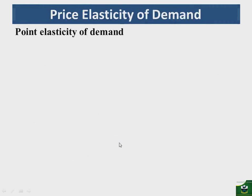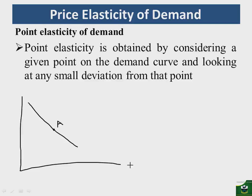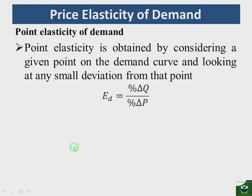We can now look at the point elasticity of demand. Point elasticity is obtained by considering a given point on the demand curve and looking for any small deviation from that point. If you have a demand curve with a point A, you measure how responsive quantity demanded will be to any deviation from that point. Using the conventional formula, elasticity equals percentage change in quantity demanded divided by percentage change in price.